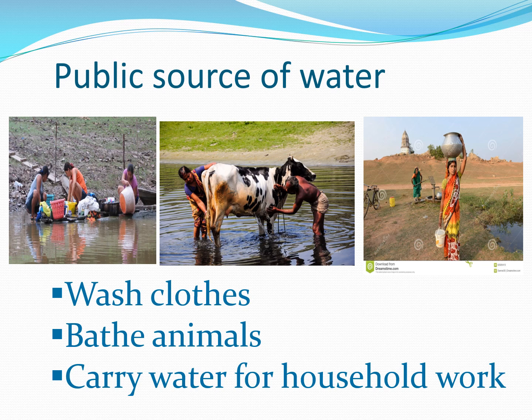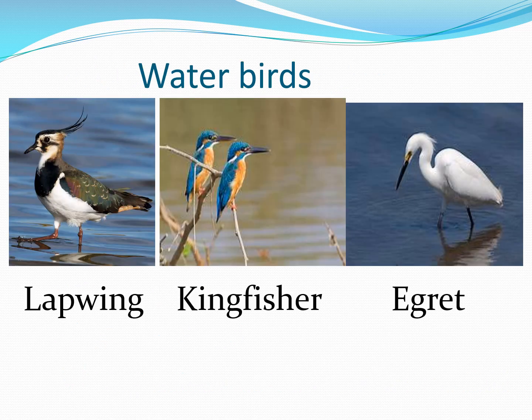Public source of water. In many villages, cows, buffaloes and goats come to the river or pond to drink water. Grass and other bushes can be seen growing near the water hole. Animals bathe themselves in it. People from the village wash their clothes and carry water to use at home. Birds like the lapwing, kingfisher and egret can also be seen around the water source.